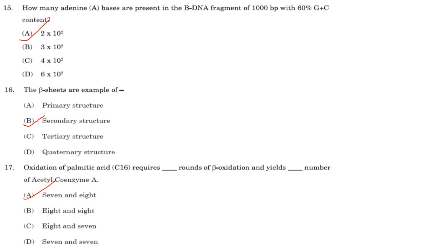Beta sheets are an example of secondary structure. Answer is option B.